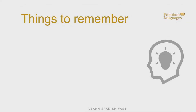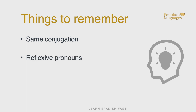So the things to remember in this unit are that reflexive verbs and normal verbs have the same conjugation, with the difference that we add a reflexive pronoun in front of them — me, te, se, nos, os, and se. And we use these reflexive verbs a lot when talking about our daily routine.